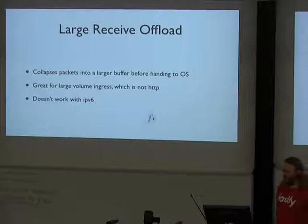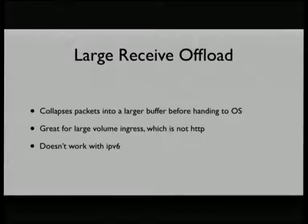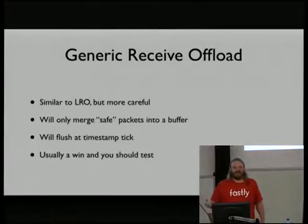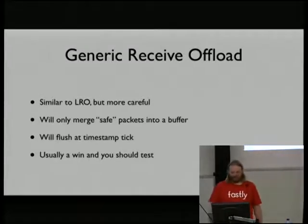The first partial offload is Large Receive Offload (LRO). If you're getting a lot of incoming traffic, every packet crossing into kernel space raises an interrupt. HTTP doesn't necessarily follow the pattern LRO is designed for, so it's not as interesting. Several brands of NICs also don't do LRO for IPv6, which is a problem on the public internet. Then there's GRO — Generic Receive Offload — which is a bit better, with the idea of merging safe packets before handing off to the OS. It might help in some environments.